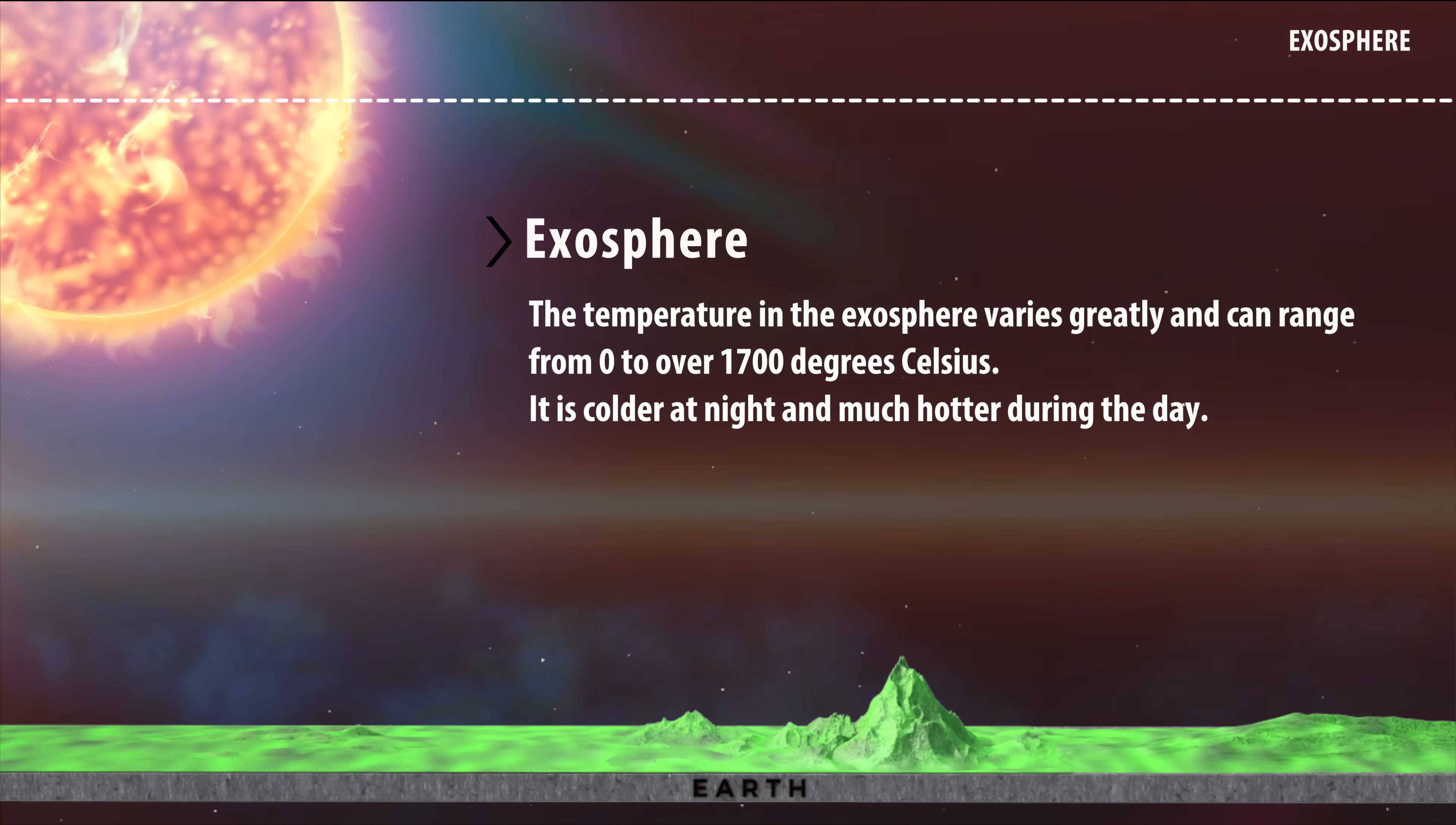The temperature in the exosphere varies greatly and can range from 0 to over 1700 degrees Celsius. It is colder at night and much hotter during the day.